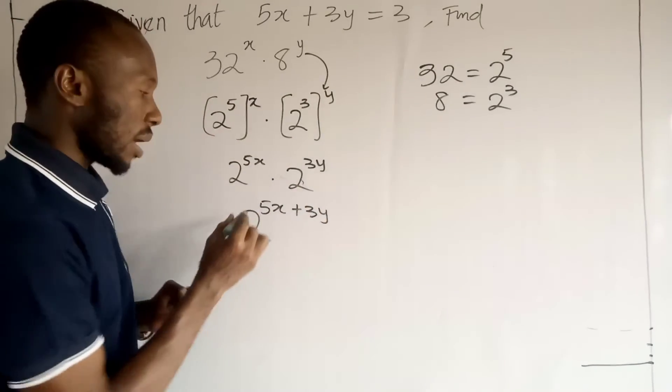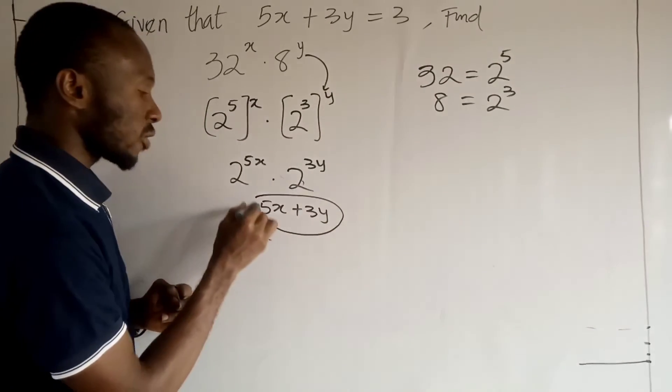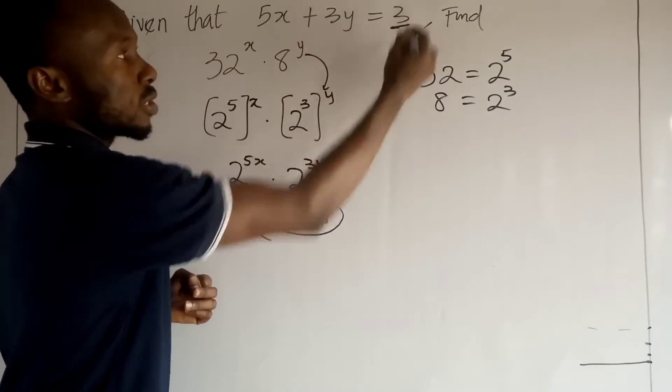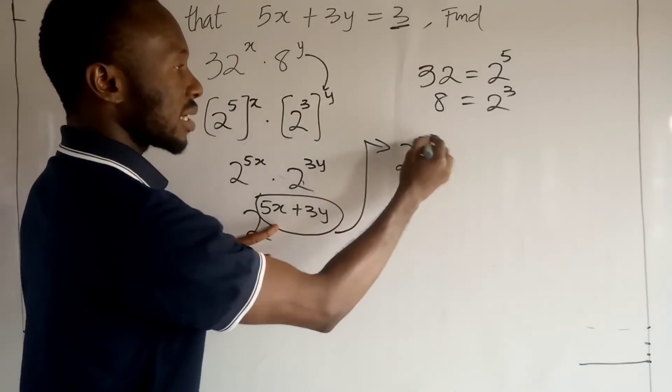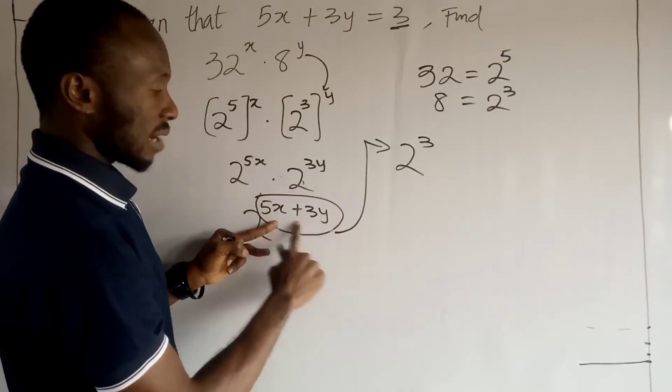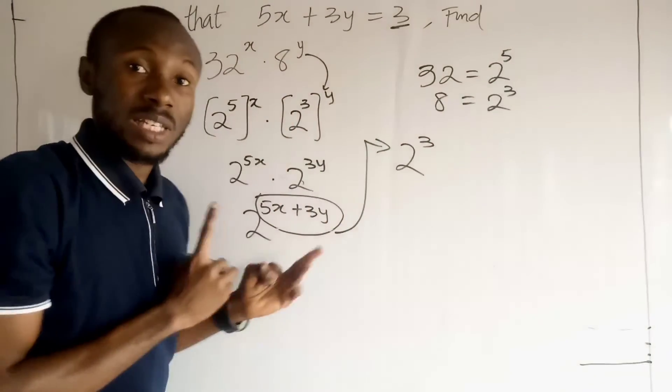This is what we have. But remember that we know this guy, this guy is already given to us to be 3. So, therefore, this guy becomes 2 to the power 3, because all this guy right here is just 3. So, it's already given to us.